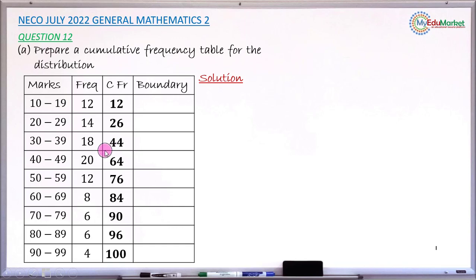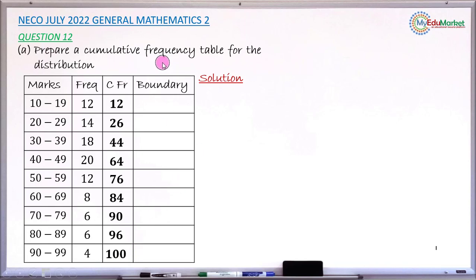Continuing: 44 plus 20 gives 64; 64 plus 12 gives 76; 76 plus 8 gives 84; then 96 plus 4 gives 100. Your last cumulative frequency will always equal the total number of data — in this case 100 students — so the last cumulative frequency is 100. Question (a) is now answered.